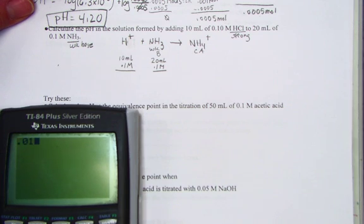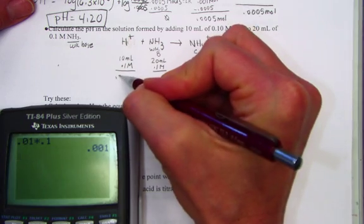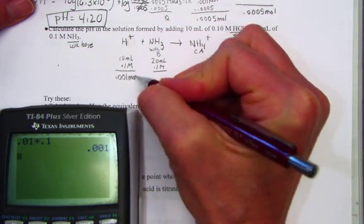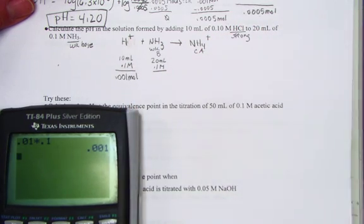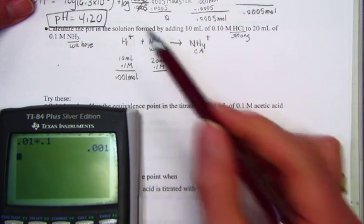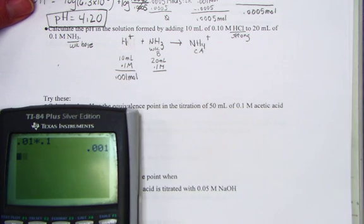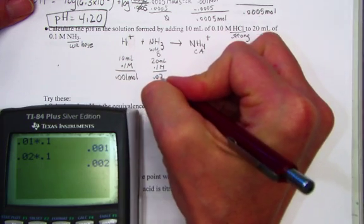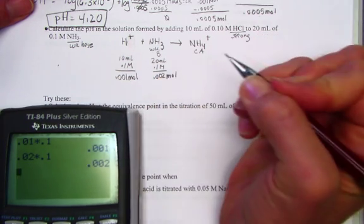So 0.01 liters times 0.1 molarity gives me 0.001 moles of the strong acid, denoted as H+. And 0.02 times 0.1 gives us 0.002 moles of the weak base.